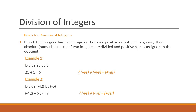Division of integers. So let's see what are the rules for the division of integers. The rules for division are more or less same as that of the multiplication. The first rule says if both the integers have same sign, that is if both are positive or both are negative, then the absolute value of the two integers are divided and positive sign is assigned to the quotient.